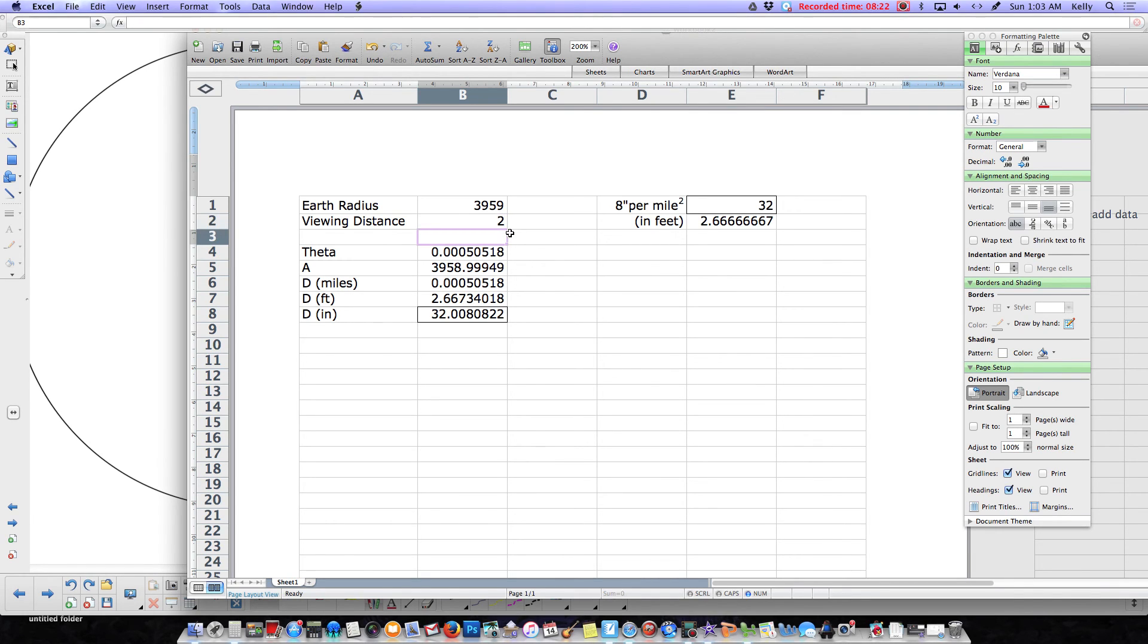Is it close? Yep, this says exactly 32. This is 32.08. Let's go to 20 now. 3200.8, 3200. That's getting a little bit further away. Let's go to 100.